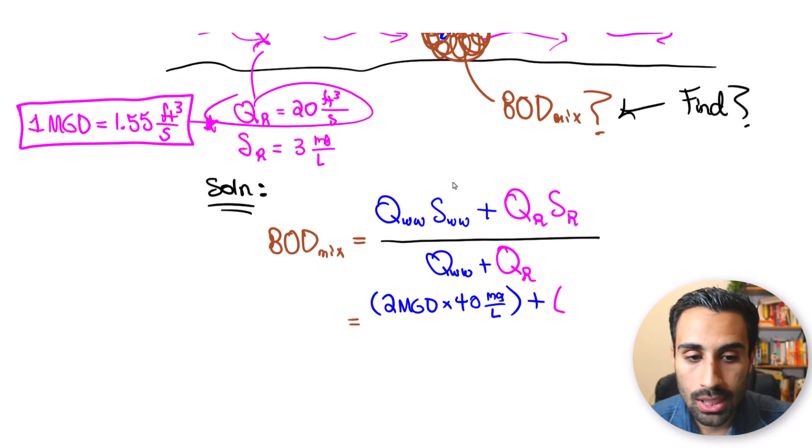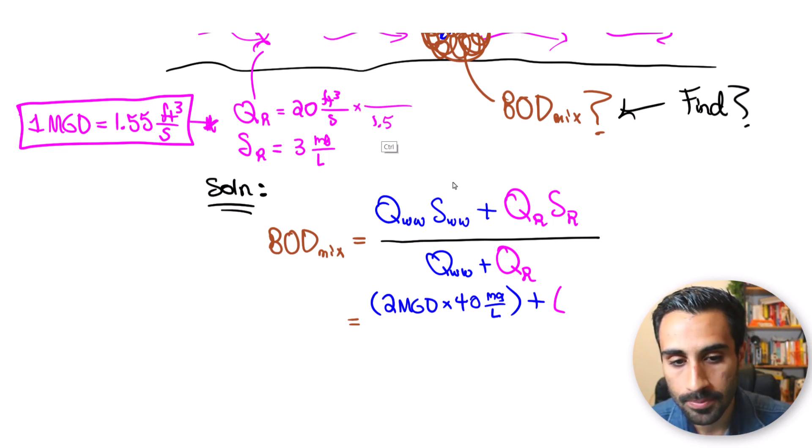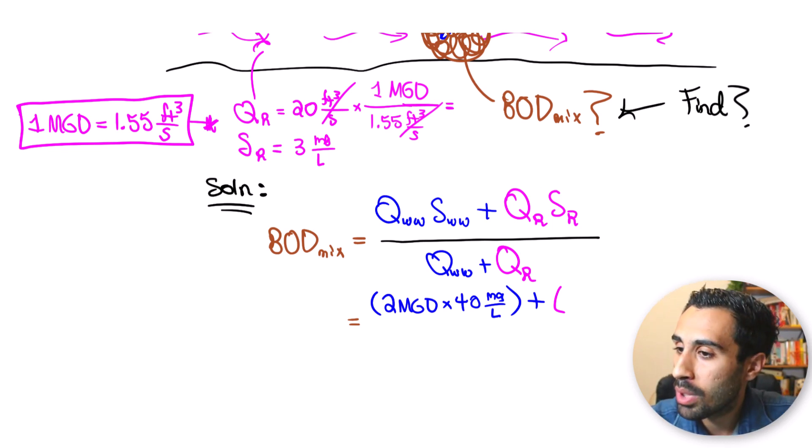So what we will do in this one is take that 20 CFS and say that 1.55 CFS, there is 1.55 cubic feet per second in one MGD, and that allows me to get the MGD value because these cancel, then we will get that value to be close to 12.9, 12.90 MGD, million gallon per day, so that's the value we will use for Q river.